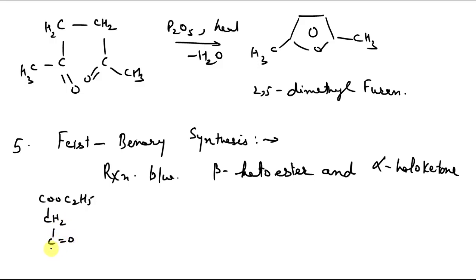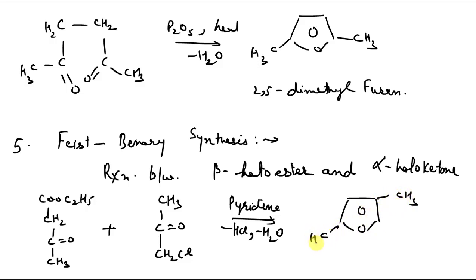CH2, C double bond O. This we also use in the synthesis of pyrrole. And then we have this compound, alpha-haloketone. This is your alpha-chloroacetone. Simply pyridine is used as a solvent. Pyridine minus HCl minus water. It will simply generate derivative of furan, COOC2H5, derivative of furan. So these are some methods by which we can synthesize furan and its derivatives.